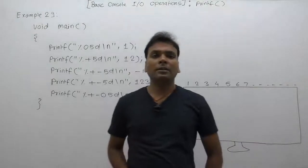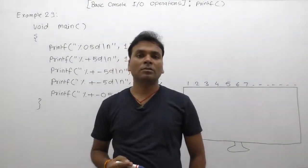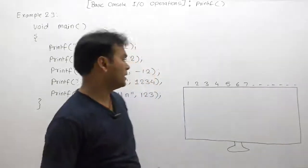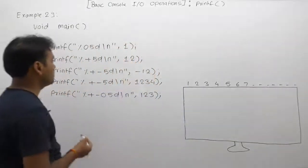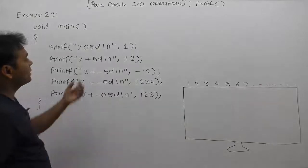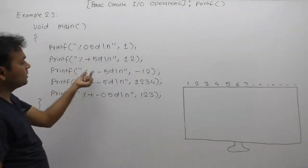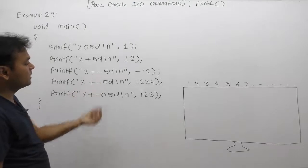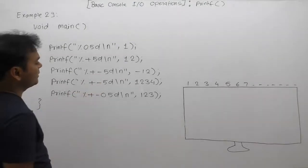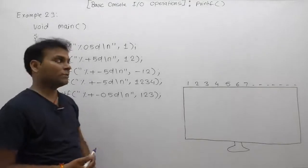In that example, we are using different combinations of flag values, modifiers, or specifier values. Here we are using specifier flag value as 0, flag value as plus, flag value as plus and minus, plus minus, or 0 — different combinations of flag values.